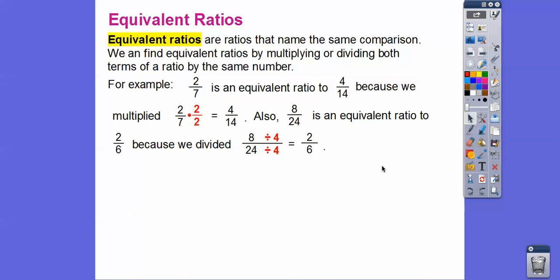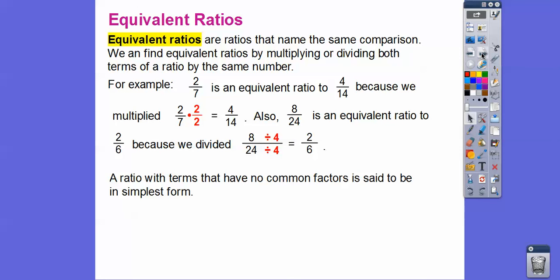Eight over twenty-four is an equivalent ratio to two over six, because we divided both the top and bottom by four. Eight divided by four equals two; twenty-four divided by four equals six. We could reduce it even more by dividing by two, but eight over twenty-four is equivalent to two over six.